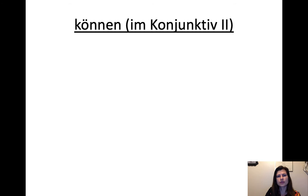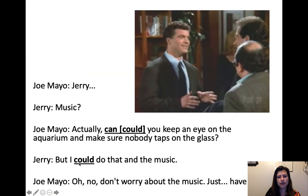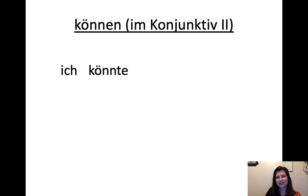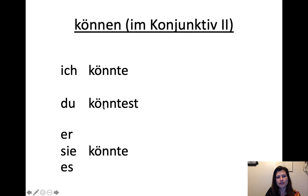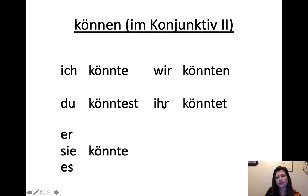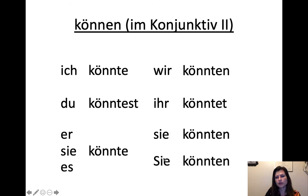Können Konjunktiv zwei — the subjunctive of können, to be able to. Ich könnte — I could, as in hypothetically I would be able to. Du könntest — you would be able to. Er/sie/es könnte. Wir könnten — we would be able to. Ihr könntet — y'all could. Sie könnten / sie könnten — they would be able to. Note: in English, "could" is also a past tense, but in German ich könnte is only the hypothetical — not the past tense.